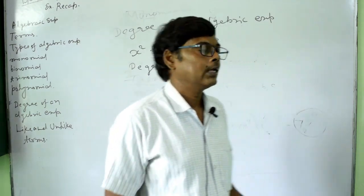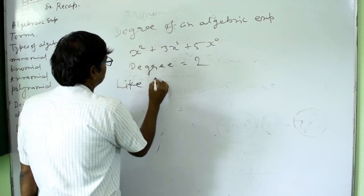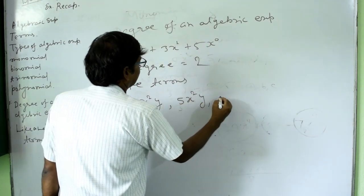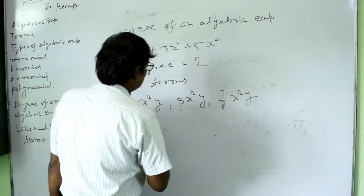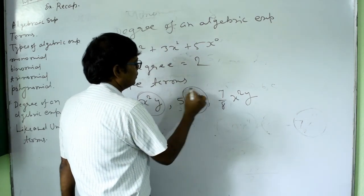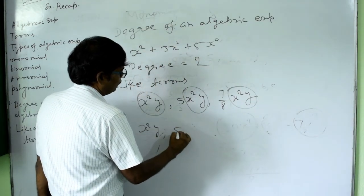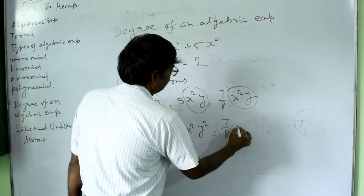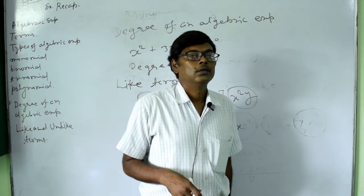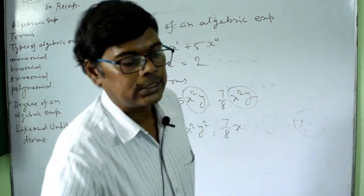Now, like and unlike terms: like terms are those where the variable part is the same. For example, x²y, 5x²y, and (7/8)x²y are all like terms because x²y is the same in each. If the variables differ — say x²y, 5x²y², and 7x — those are unlike terms.